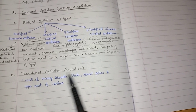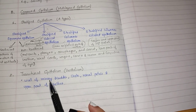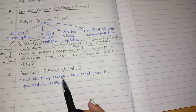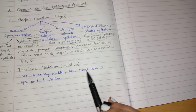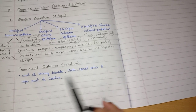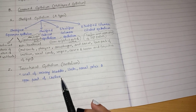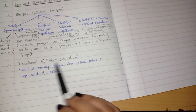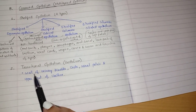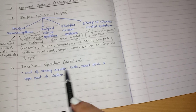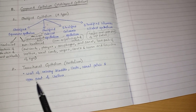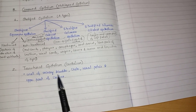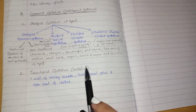Transitional epithelium, also called urothelium, is found in the walls of the urinary bladder, ureter, renal pelvis, and the upper part of the urethra.